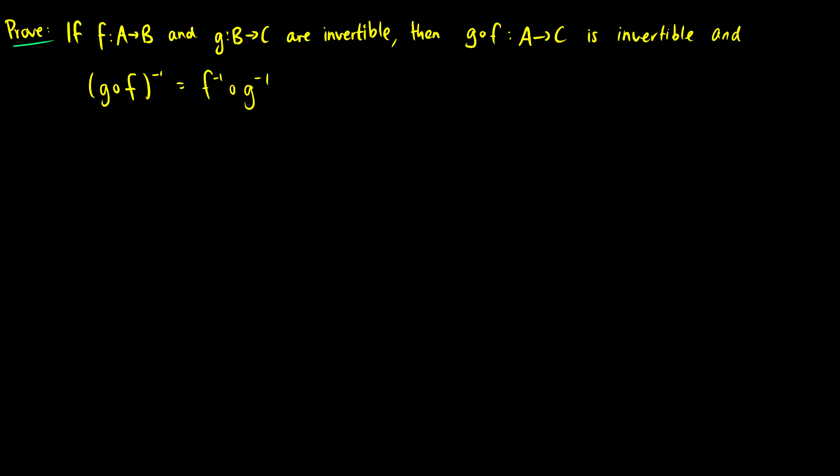If f from A to B and g from B to C are invertible, then g∘f from A to C is invertible, and the inverse of g∘f is going to be f⁻¹∘g⁻¹. Let's prove the first statement. If f and g are invertible, then g∘f is invertible.